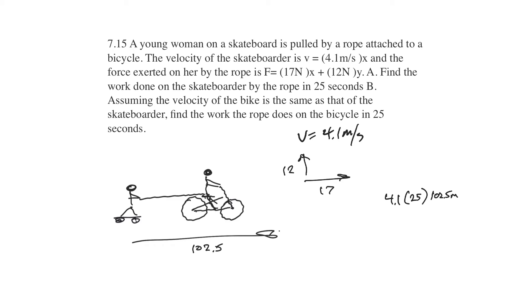We want to know the work done on the skateboarder by the rope. So work equals force times distance. The force is 17 newtons. The distance is 102.5 meters. So that will give work is going to be equal to 1742.5 joules.